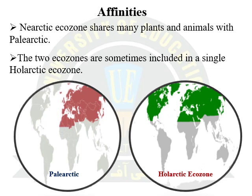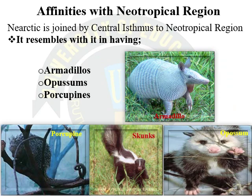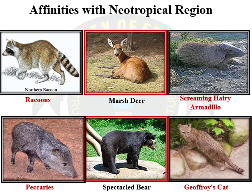The Nearctic ecozone shares many plants and animals with the Palearctic; the two ecozones are sometimes included in a single Holarctic zone. Common animals between the Nearctic and Palearctic regions include wildcats, moles, squirrels, reindeer, tits, bears, wild oxen, deer, and rabbits. After the establishment of the Isthmus of Panama, both American continents — Nearctic and Neotropical — were joined, so they share animals including armadillos, opossums, and porcupines. Other shared fauna include raccoons, marsh deer, screaming hairy armadillo, peccaries, spectacled bear, and Geoffrey's cat.